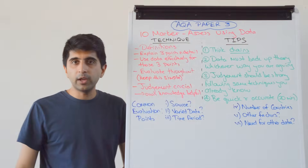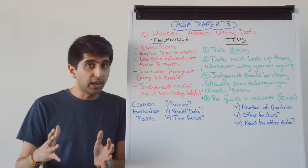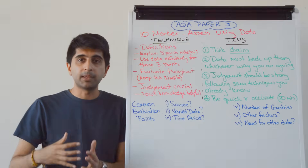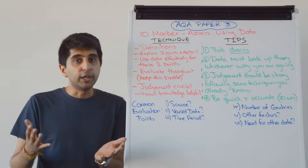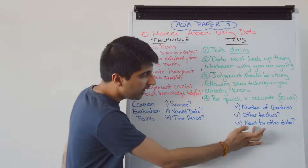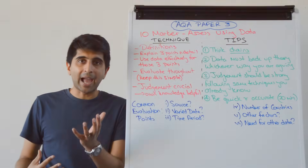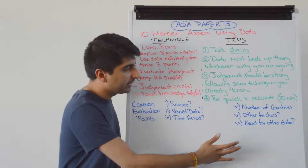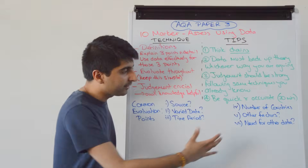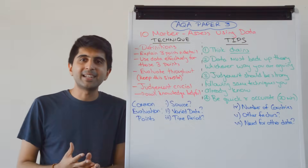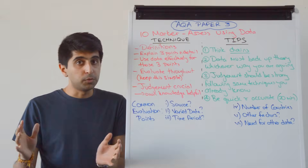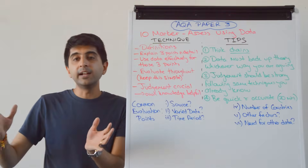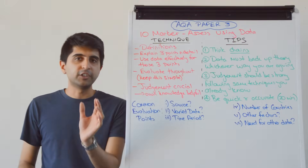Maybe you can also question the number of countries used. Is it only a few countries used for comparison — is that good enough to form a judgment? Are there other factors that could explain the relationship that the data doesn't include? You can bring those in when evaluating. Is there a need for other data to answer the question properly? What data would you like — write it down. There isn't data about those other factors, so maybe we need it to establish a correlation versus causation relationship, which is very difficult in economics with only one data variable. With numerous data sources, establishing correlation versus causation is much easier and you can form a better judgment.